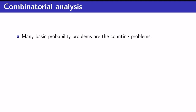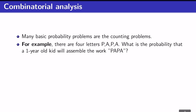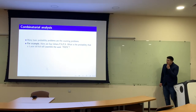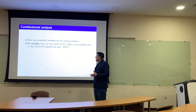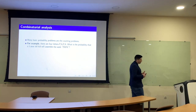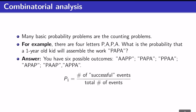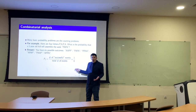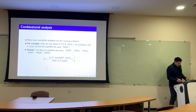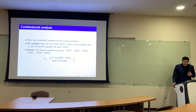Many probability problems are based on counting problems. For example, there are four letters P-A-P-A. What is the probability that a one-year-old kid will assemble the word Papa? I need to figure out the number of ways of rearranging these four letters, which is six. The possible ways are A-A-P-P, P-A-P-A, P-P-A-A, and so on. The probability is one over six. You don't need to write down all possible ways — you just need to know the total is six. That's why you need combinatorial analysis.